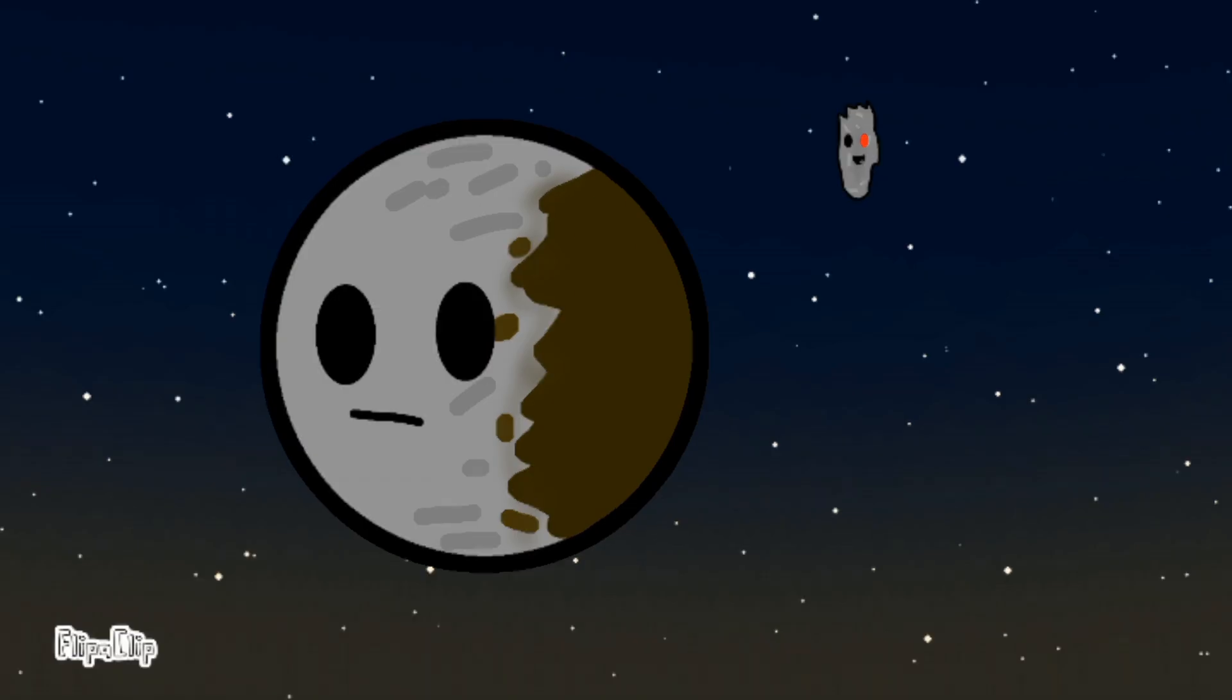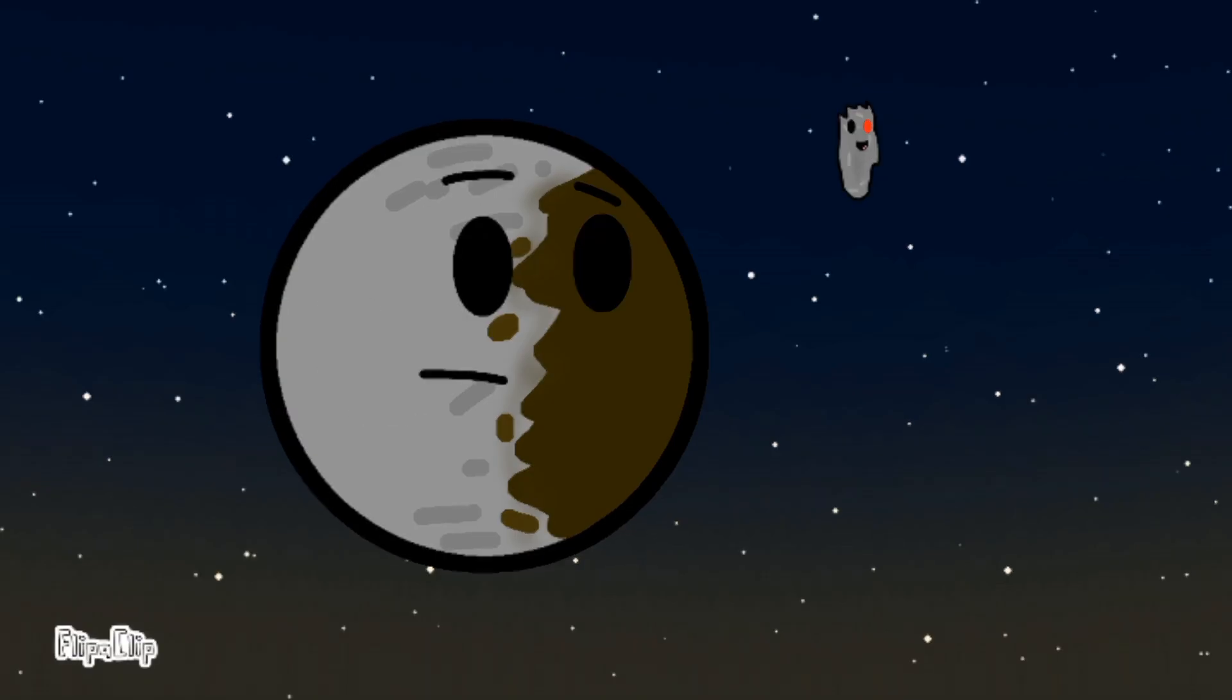A moon walked up to the comet stand, then he asked to the planet right in the stand. Hey, bom bom bom. Got any asteroids?